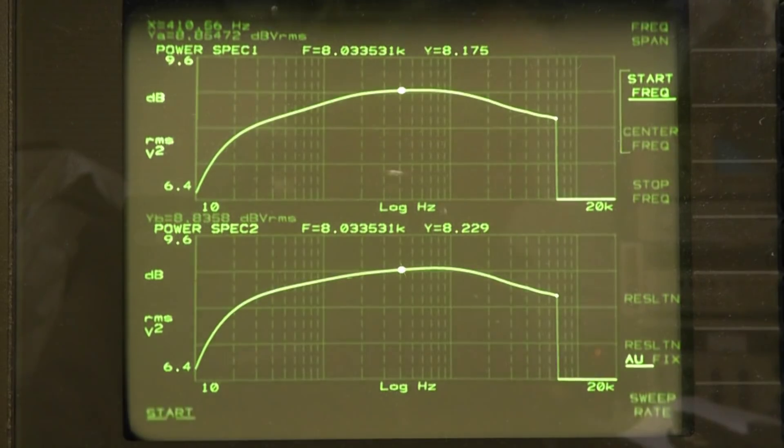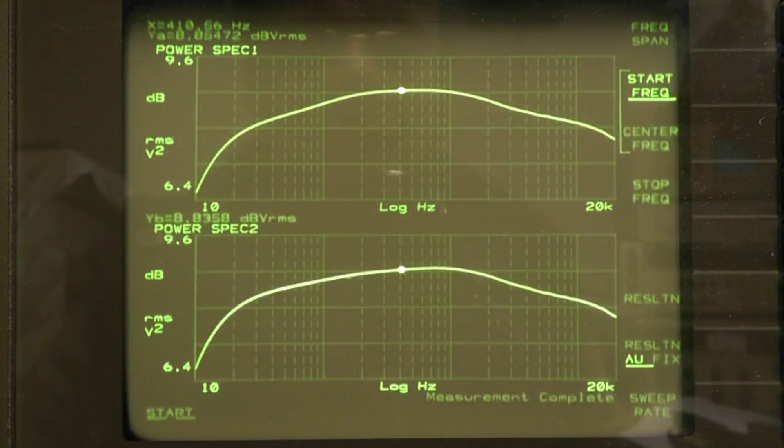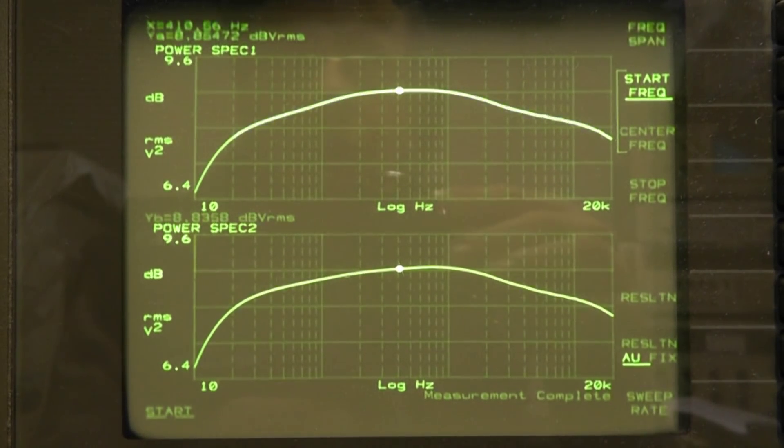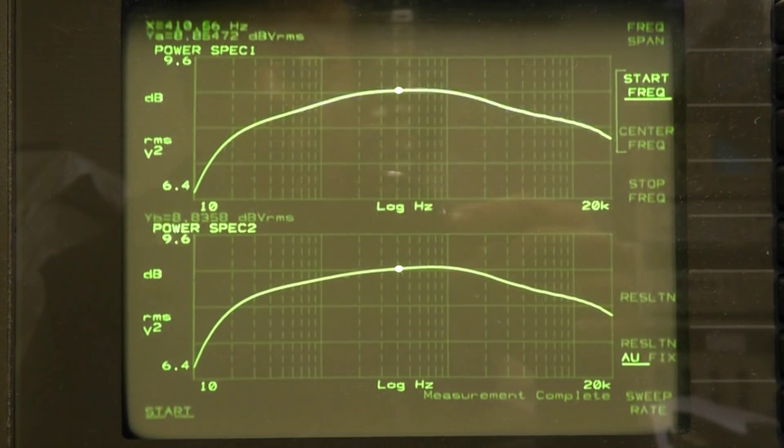I think really that sort of wraps up this Marantz PM350. I've enjoyed working on this. It's been an unusual fault. I've never come across a pre-amplifier fault quite like this and I didn't think tone controls could cause so much of a problem. And it's been a good test also to put the HP 3562 through as well. So let's go back to the amplifier and see what the finished product looks like.